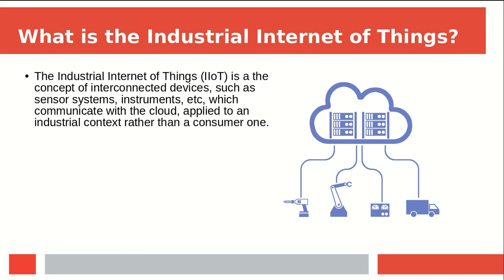So, what is the Industrial Internet of Things? Well, the concept comes from the Internet of Things, which is the concept of having smart devices — it might be your thermostat, fridge, your phone, car, camera, all sorts of things — and having these devices be able to talk to one another through the cloud.